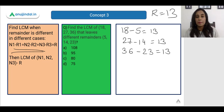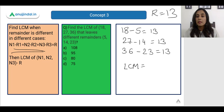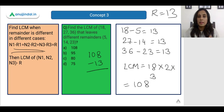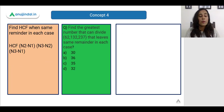The LCM of 18, 27, and 36 is 108. We subtract r = 13 from it: 108 − 13 = 95. So the correct answer is option B, which is 95.